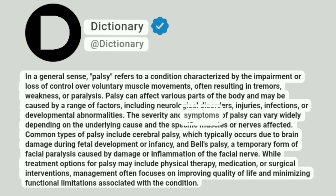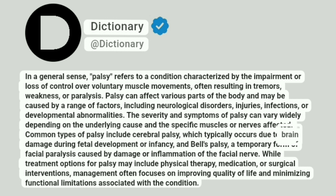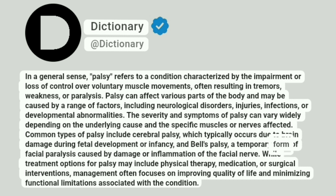The severity and symptoms of palsy can vary widely depending on the underlying cause and specific muscles or nerves affected. Common types of palsy include cerebral palsy, which typically occurs due to brain damage during fetal development or infancy, and Bell's palsy, a temporary form of facial paralysis caused by damage or inflammation of the facial nerve.